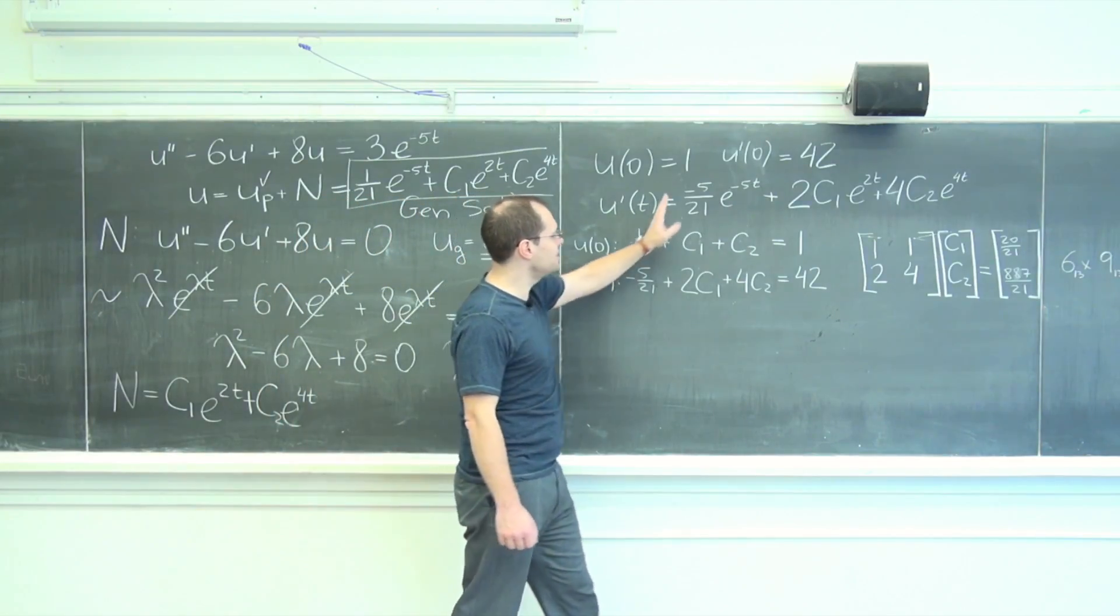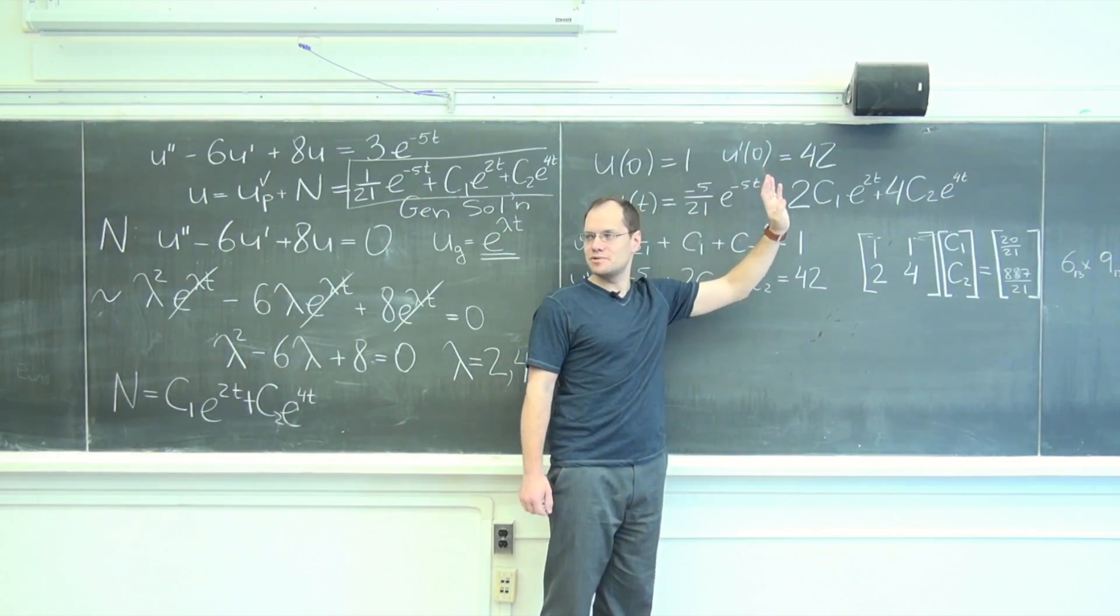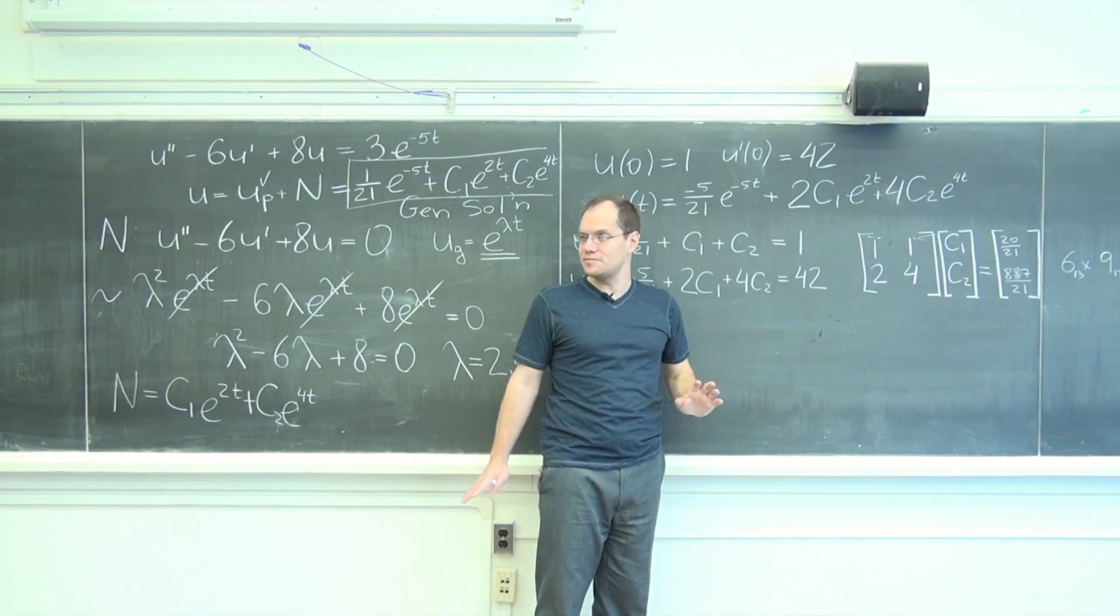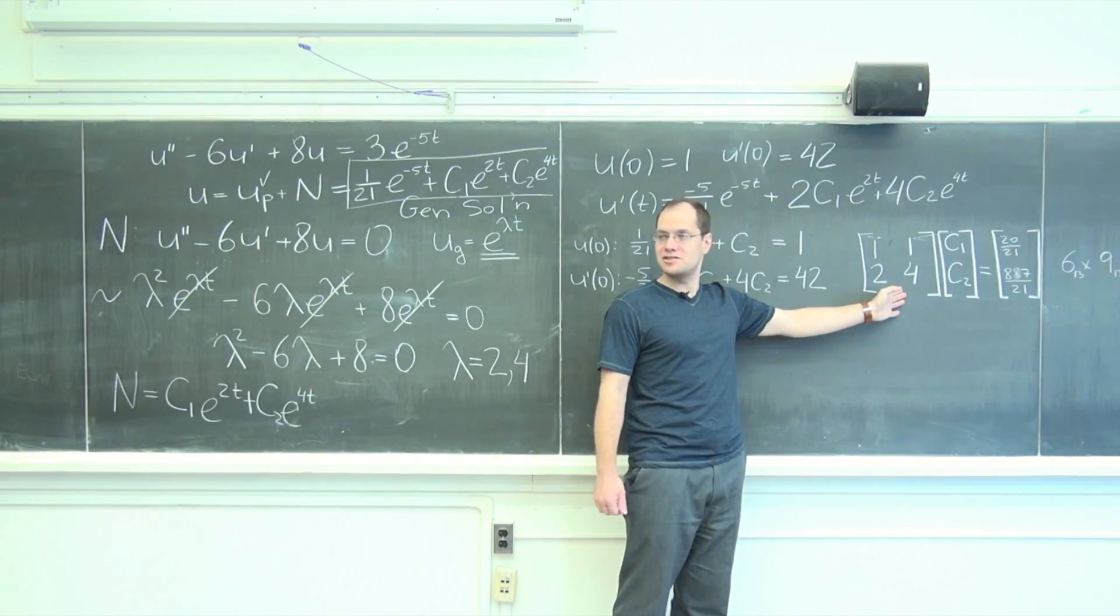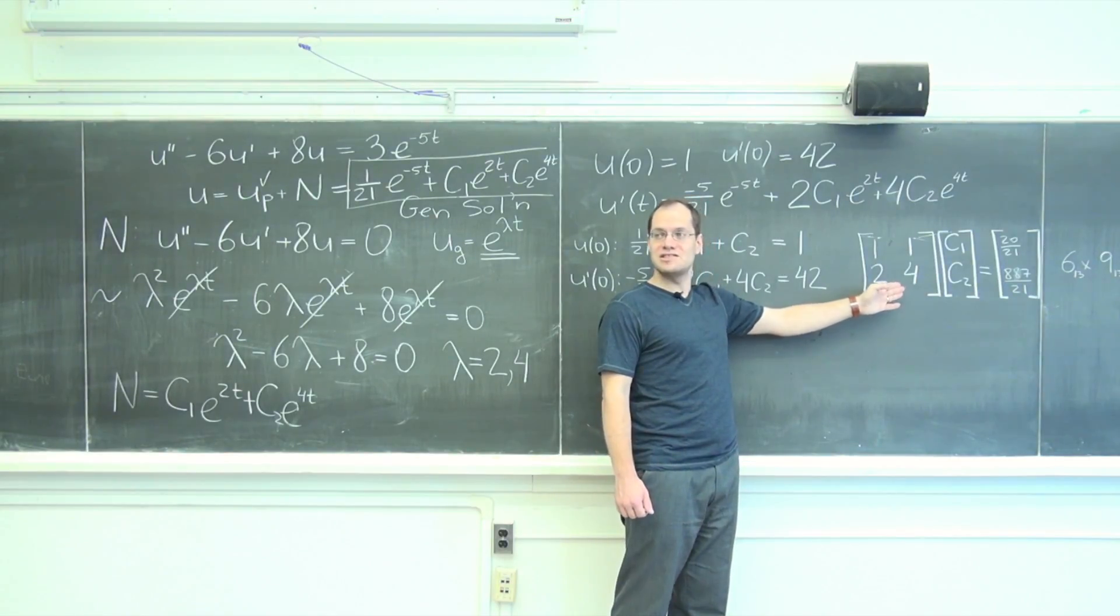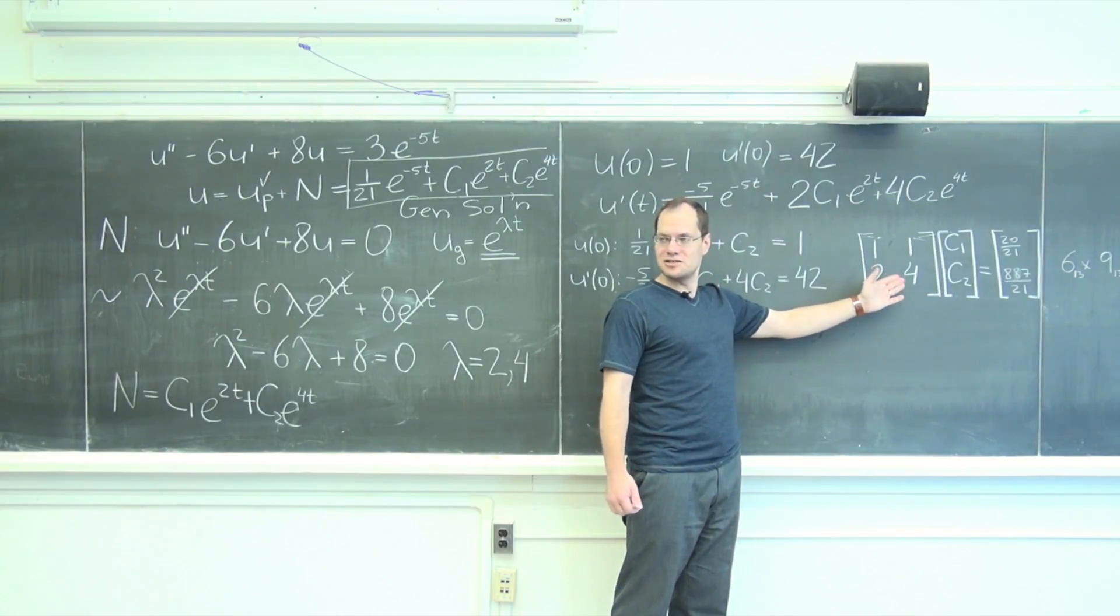and you can tell that I could have chosen any two numbers whatsoever, and nothing would have broken down. Because the only time something like this breaks down is when the matrix is singular. But the matrix does not depend on the initial conditions.